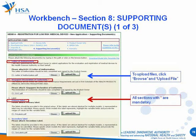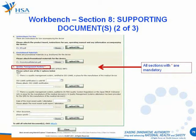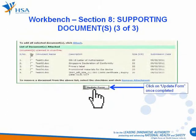The supporting documents are attached by browsing the local storage devices for the documents using the Browse button, then click the Upload File button to attach these documents. All sections with asterisks are considered mandatory, so you would need to include the Letter of Authorization, a Singapore Declaration of Conformity, and the Primary Label. This also includes the Quality Management System Certificate for the Manufacturing Site declared in the Manufacturer Site Information section. Your cooperation to provide the information will greatly facilitate the review process. Click on Update Form once completed.